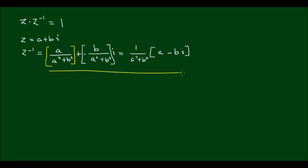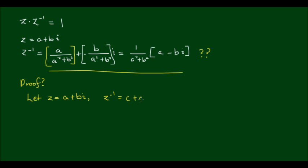So the question is, how do we get to this result for the inverse? What's the proof? Well, let z equal any complex number, so a plus bi. And let z equal another complex number, c plus di. And let's multiply these two complex numbers together, so we'll get a plus bi times c plus di.